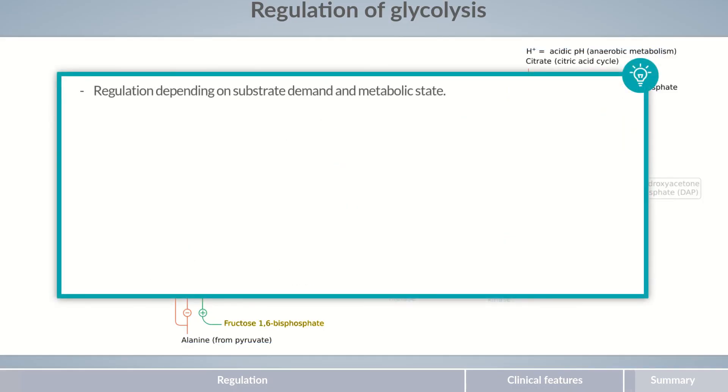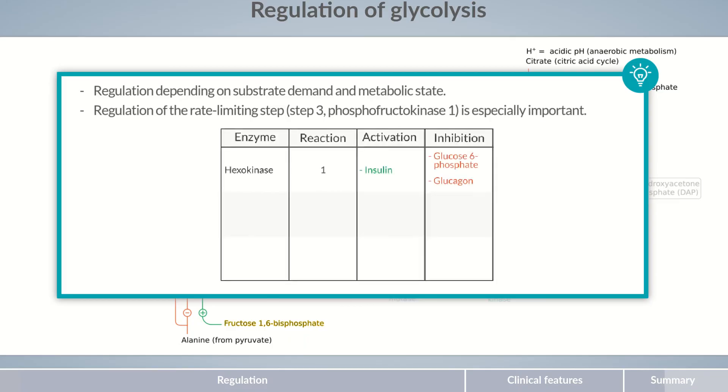Glycolysis regulation ensures that there are sufficient amounts of important substrates in the cell. Physiologically opposing metabolic processes are coordinated so that they don't work against each other, expending energy. The slowest and therefore the rate-limiting step in glycolysis is step 3. Hence, the regulation of phosphofructokinase-1 is especially important for glycolysis. Hexokinase is activated by insulin and inhibited by glucose-6-phosphate and glucagon. Phosphofructokinase-1 is activated by AMP and fructose-2,6-bisphosphate and inhibited by ATP, citrate, and low pH levels. Pyruvate kinase is activated by fructose-1,6-bisphosphate and inhibited by ATP and alanine.